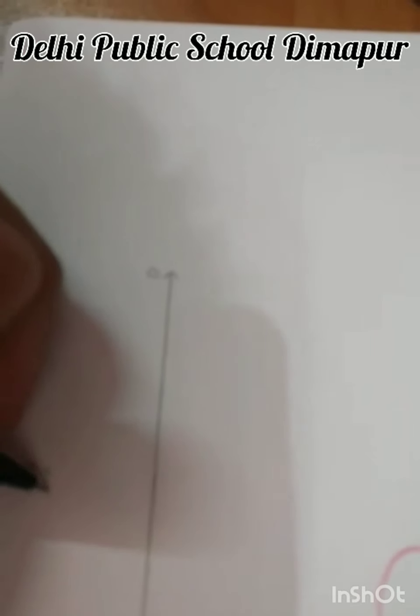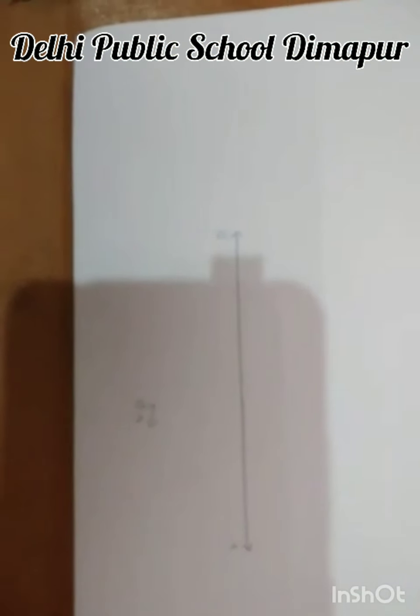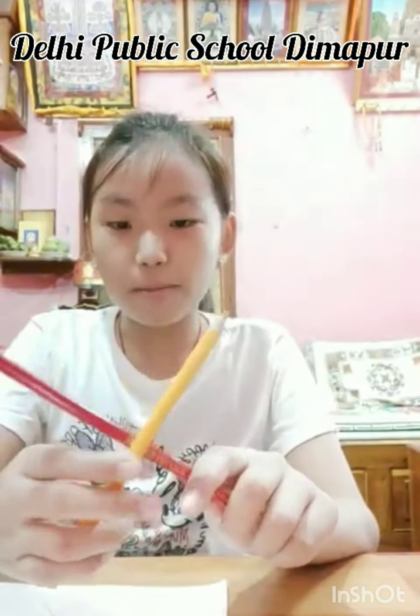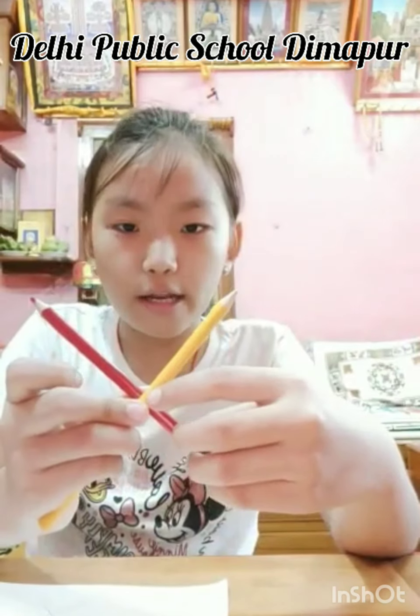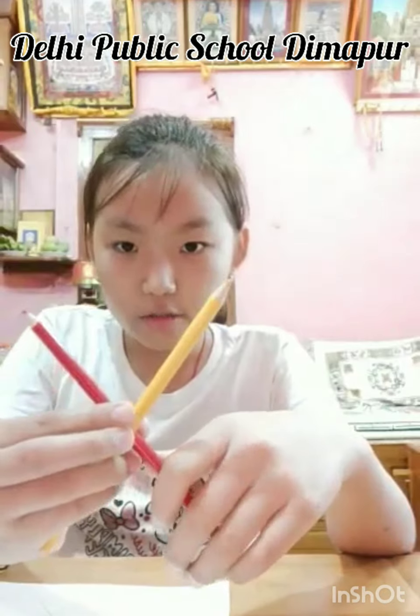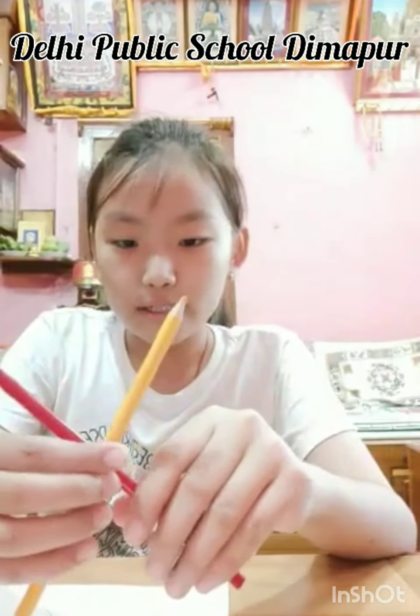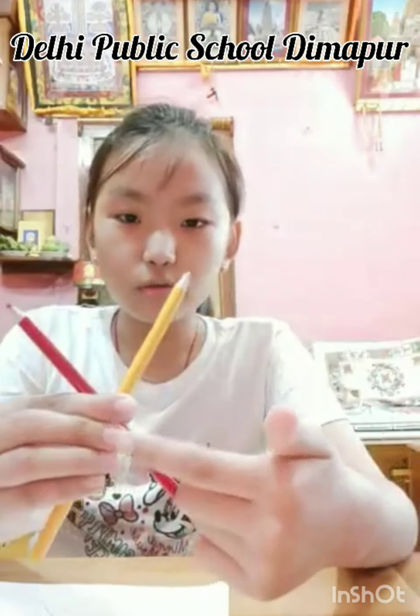Now let's talk about intersecting lines. Intersecting lines are lines that cross each other. For example, take lines AB and CD — we can name the intersection point O. If AB and CD share one common point O, they are called intersecting lines. Two lines have only one intersecting point.